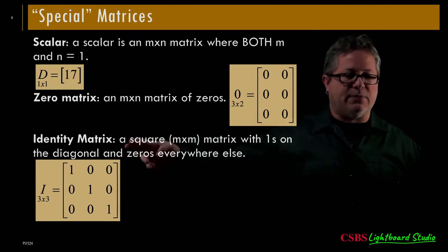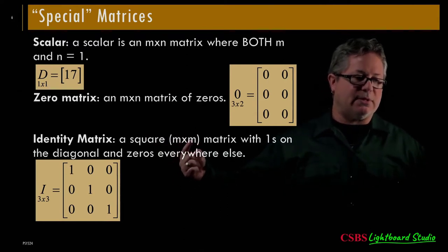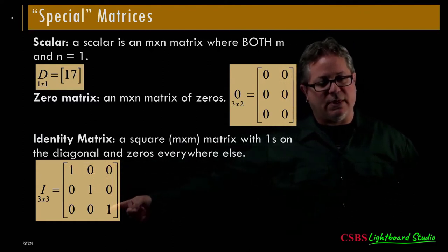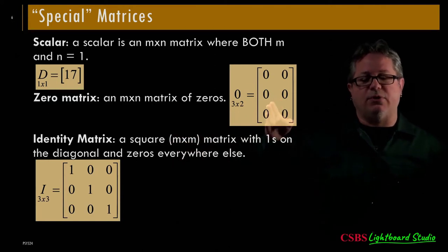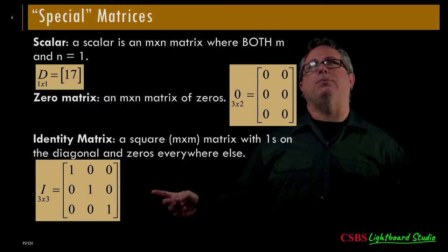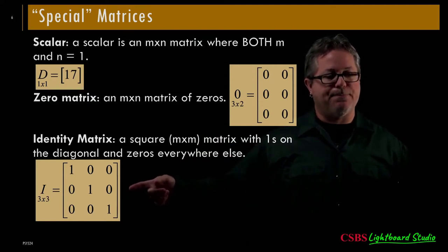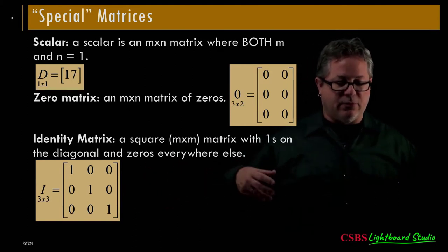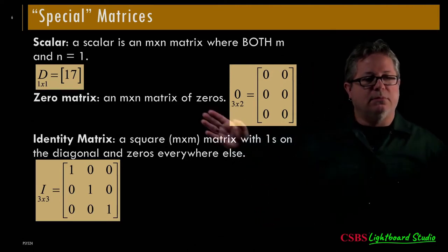Another special matrix is the identity matrix — a square matrix where you have 1s down the diagonal and 0s in the off-diagonal. This works like multiplying by 1 when working with scalars: if I take something and multiply it by 1, I just get it back again. This is the matrix version of multiplying by 1. It's called the identity matrix because multiplying any matrix by an identity matrix gives you back that matrix.